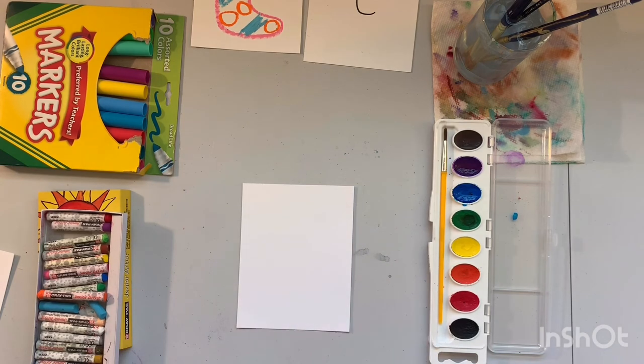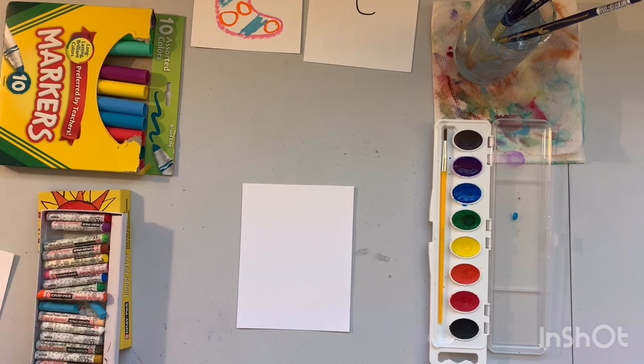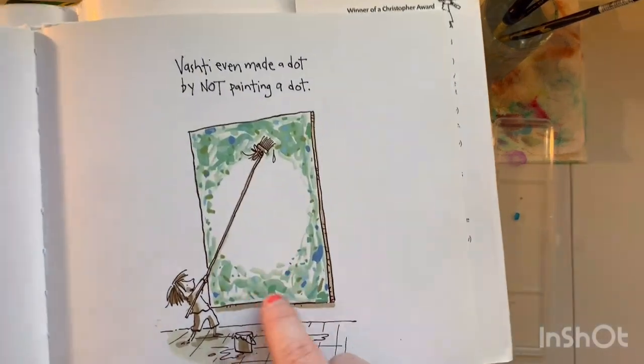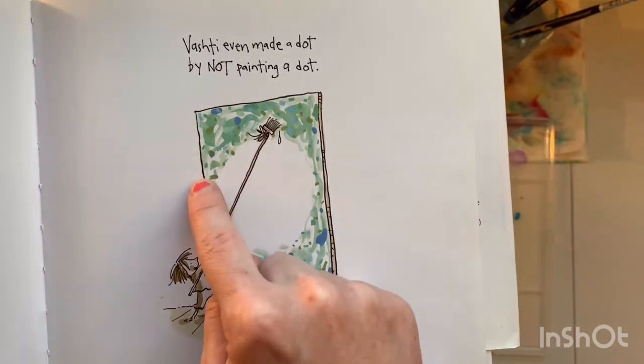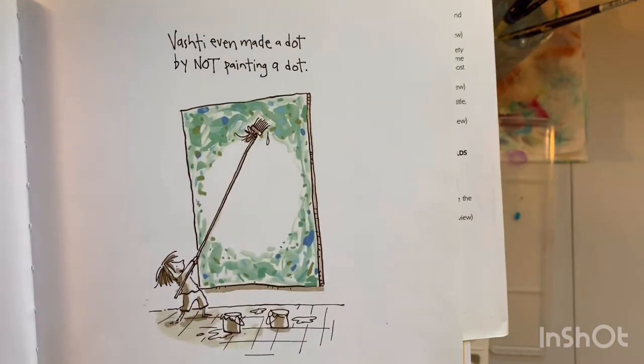In the book Vashti made a dot by not making a dot, which I think is a really fun way to think about making artwork. So we are going to do that next, make our design without making the design. So in the book she paints all around and then leaves the white of the paper to be the dot. So we're going to do that with our shape too.